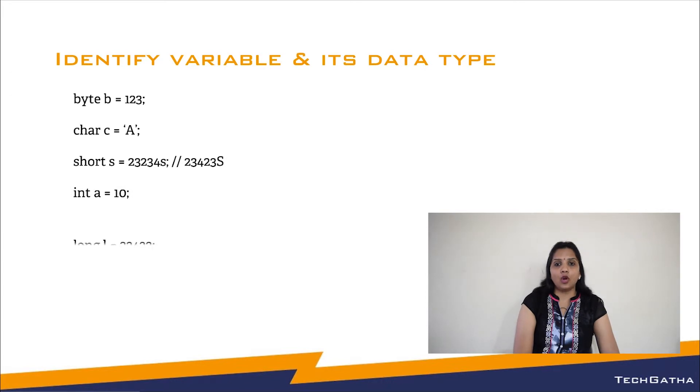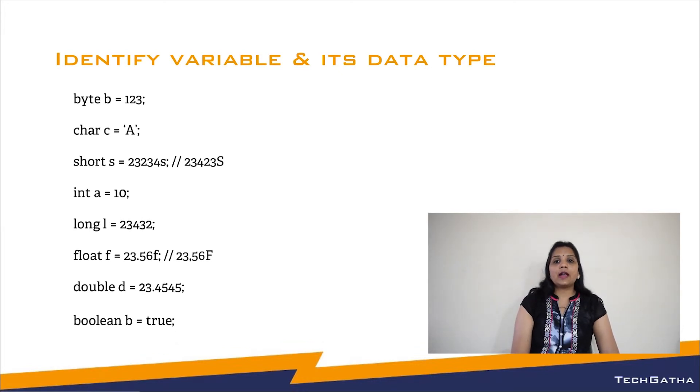We have short, we have int, we have long, then we have float. Now when you declare floating point variables, make sure that you end that value with the f, telling the JVM that this is a floating point value. Then for declaring a double variable, again you create double and store a decimal number. And for boolean values, you can declare a boolean variable and you can store only two values: true or false.